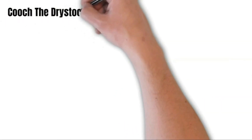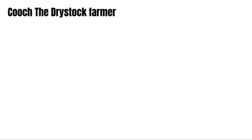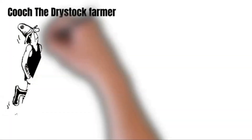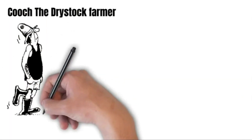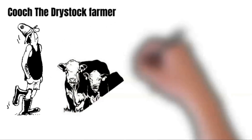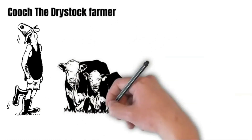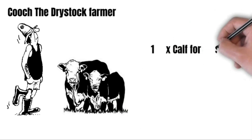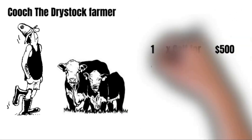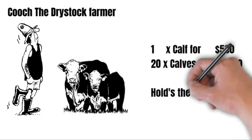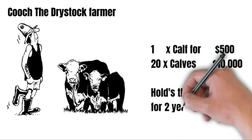Now let's look at the second farmer, Cooch. He's a dry stock farmer — good friends with Walt, but a pretty sharp fellow. He doesn't like getting up at three o'clock in the morning to milk cows, so he has dry stock, purely for the beef value. He buys these as calves at $500 each, and in total he has 20 calves, totaling $10,000 in cost. He holds these dry stock for a period of two years.